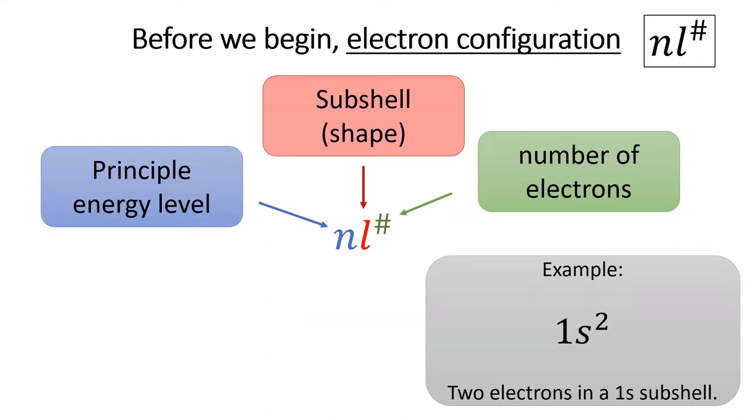D, or F. And lastly, in green, we superscript the number of electrons in that subshell. For example, the electron configuration 1s² tells me I have two electrons in the 1s subshell.